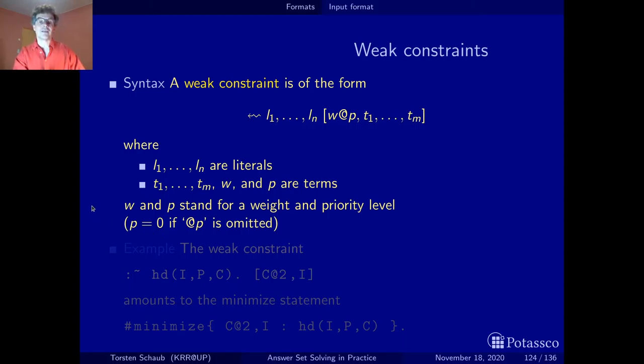Just an example—this is the example I gave already in the optimization section. If you want to configure a hard disk, the hard disk has a price and a capacity. Here I want to find the lowest capacity of hard disks. But it's just syntax. Whenever such an atom is chosen, I pay this penalty, which is expressed by the capacity.